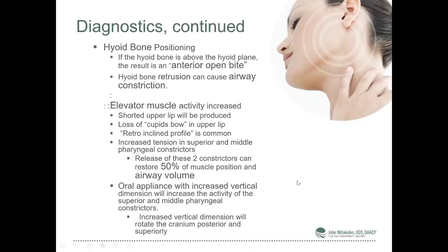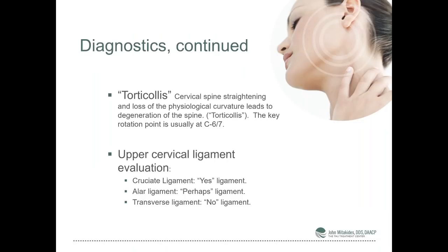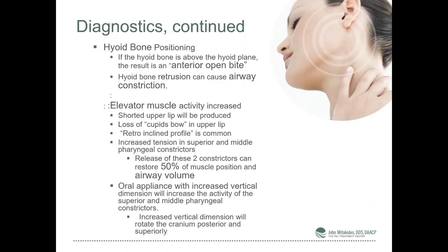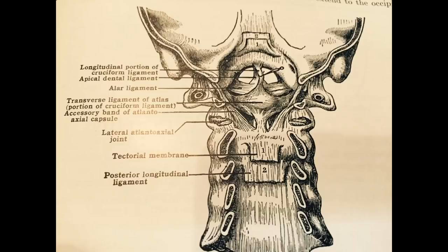When looking at the upper cervical evaluation, we talk about the cruciate ligament, the alar ligament, and the transverse ligament. This posterior view shows the alar ligament — it goes across and holds the cruciate ligament on C1. These are the alar ligaments and this is the cruciate ligament.